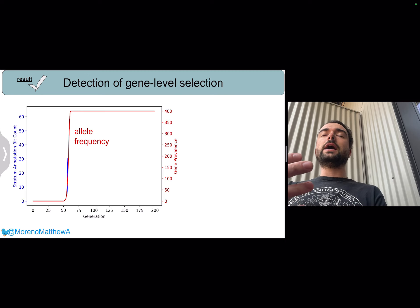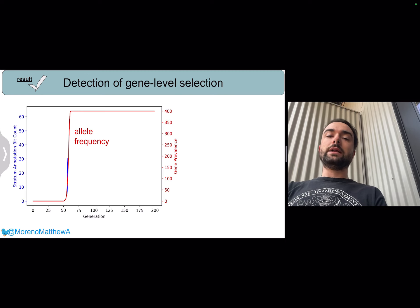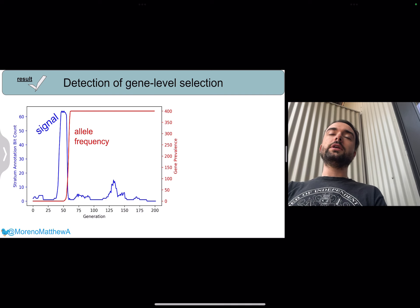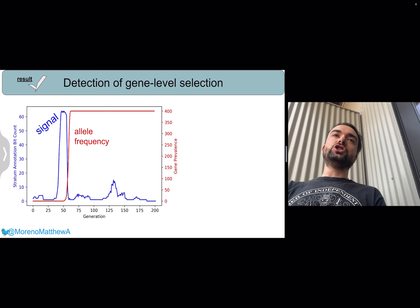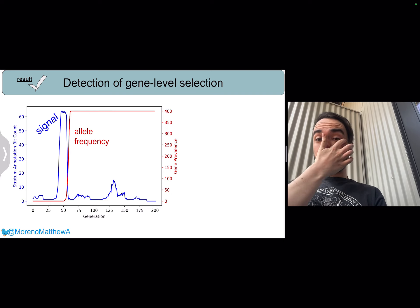If we look at our delayed copy count mechanism, we can see a really clear signal coincident with that selection event, being able to see that the copy count of that gene is going up really fast at that particular point in time.